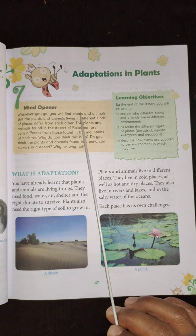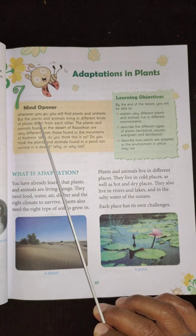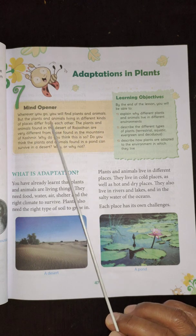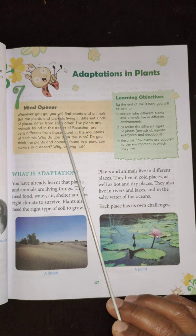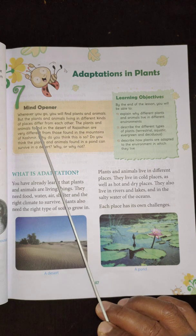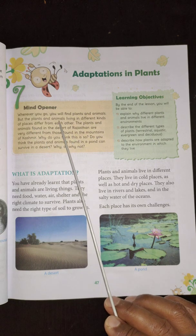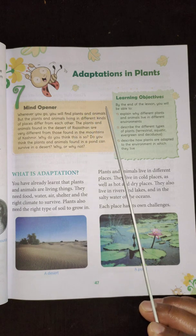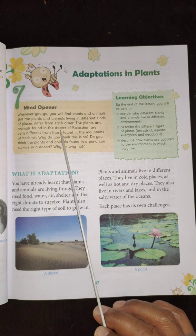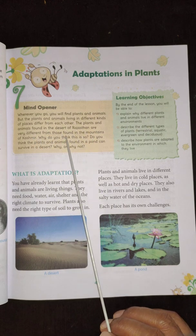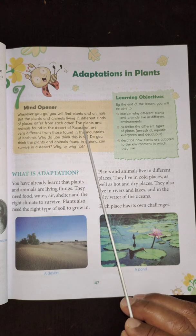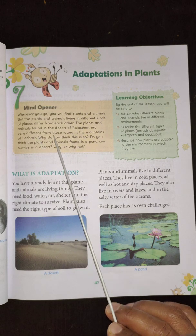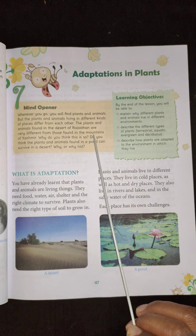Wherever you go, you will find plants and animals, but the plants and animals living in different kinds of places differ from each other. The plants and animals found in the desert of Rajasthan are very different from those found in the mountains of Kashmir.